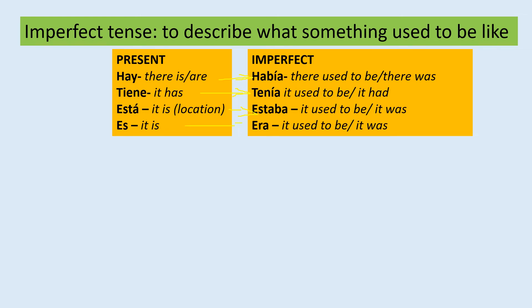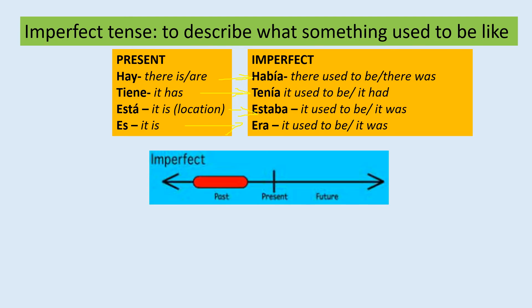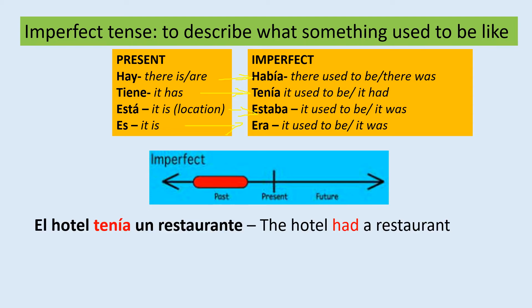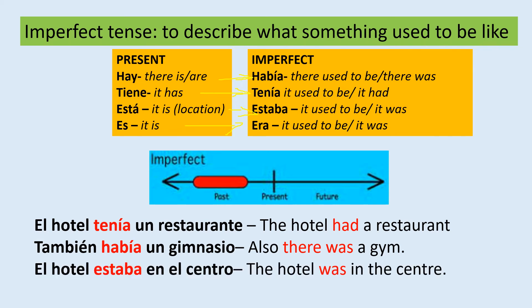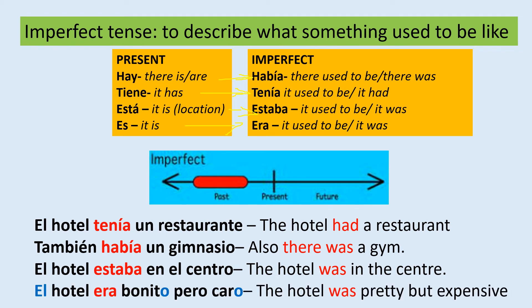We use the imperfect tense not for a specific action in the past, but to describe a period of time in the past, or describe something in the past. For example, el hotel tenía un restaurante — the hotel had a restaurant. Or, también había un gimnasio — there was also a gym. El hotel estaba en el centro — the hotel was in the center. Here you have an example of how to use location.